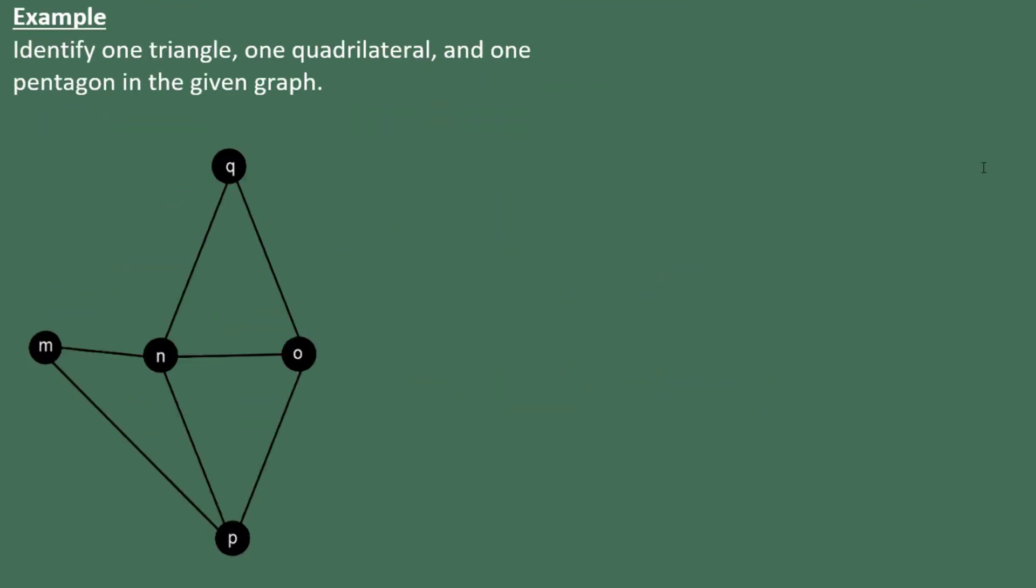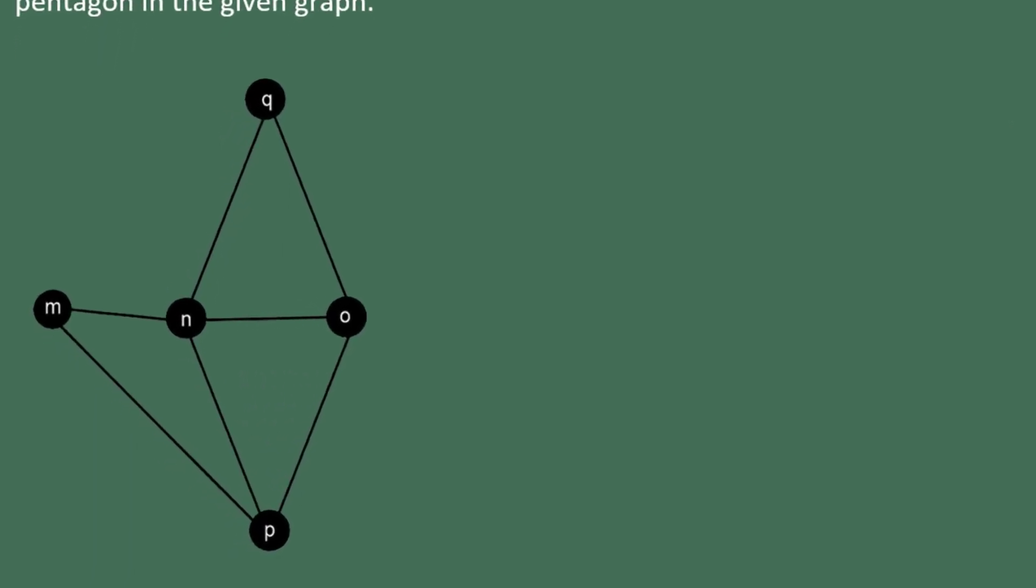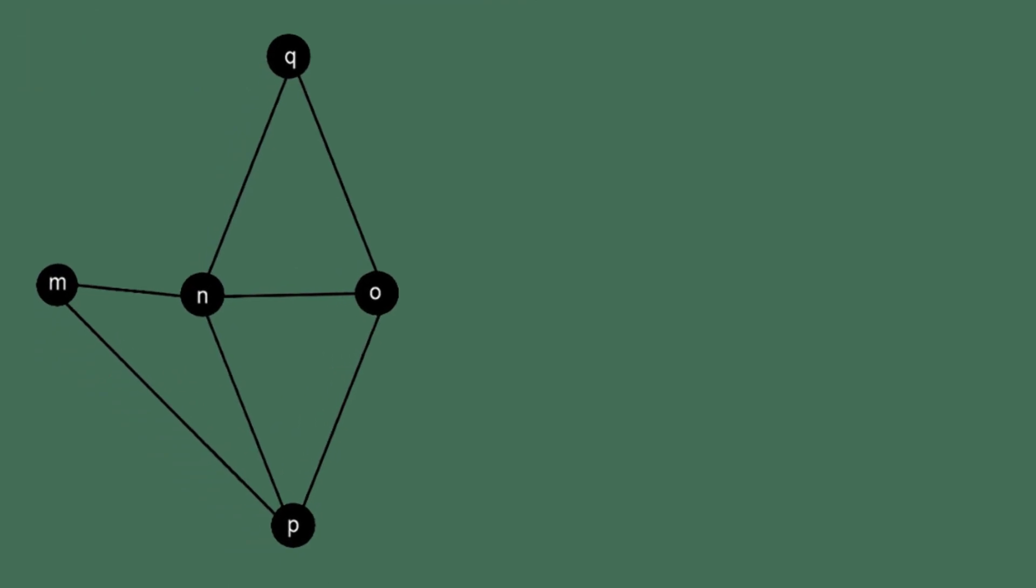In this example, we're asked to identify one triangle, one quadrilateral, and one pentagon in the given graph. Now there are definitely multiple ways to answer this question. We only have to find one triangle, for example, and there are many different triangles within this graph. For example, Q to N, N to O, and back to Q would be an example of a triangle.